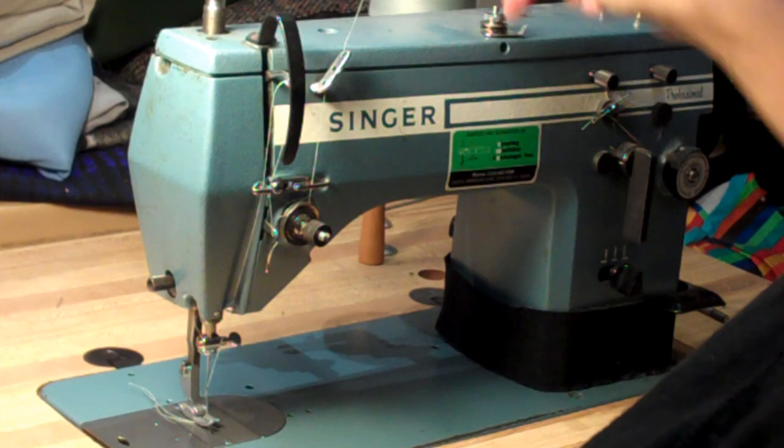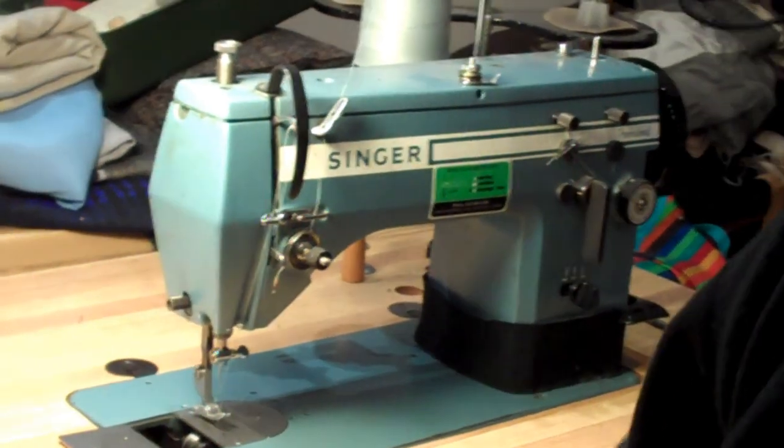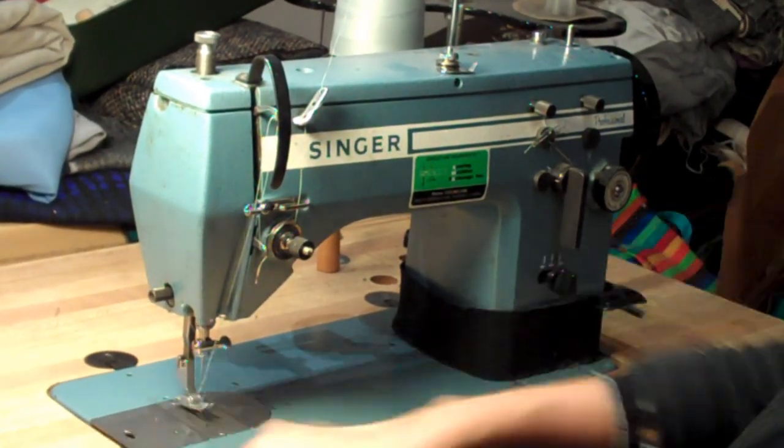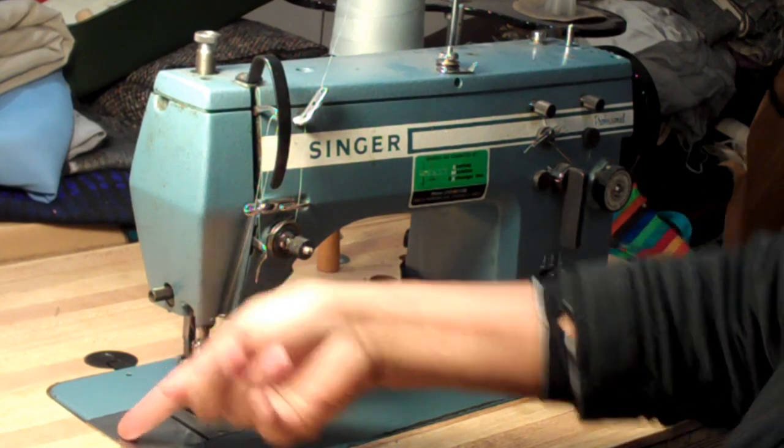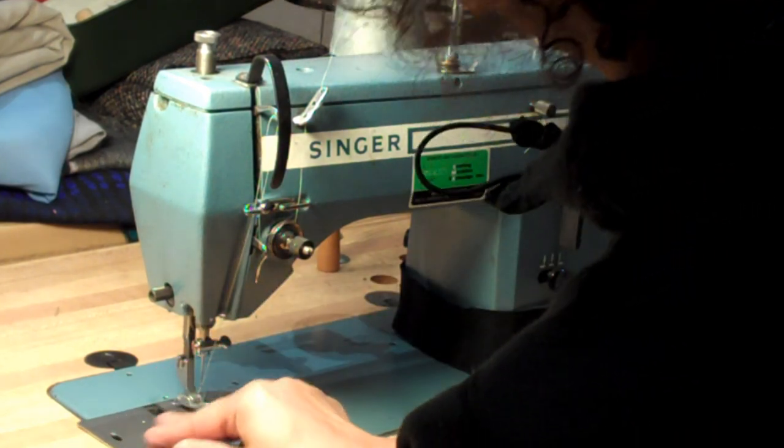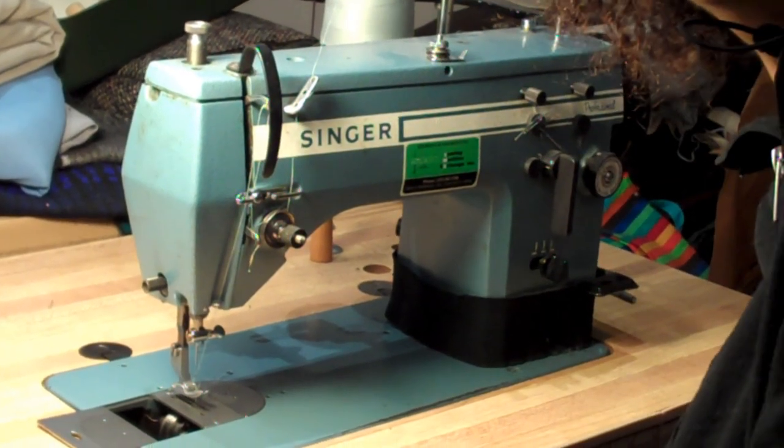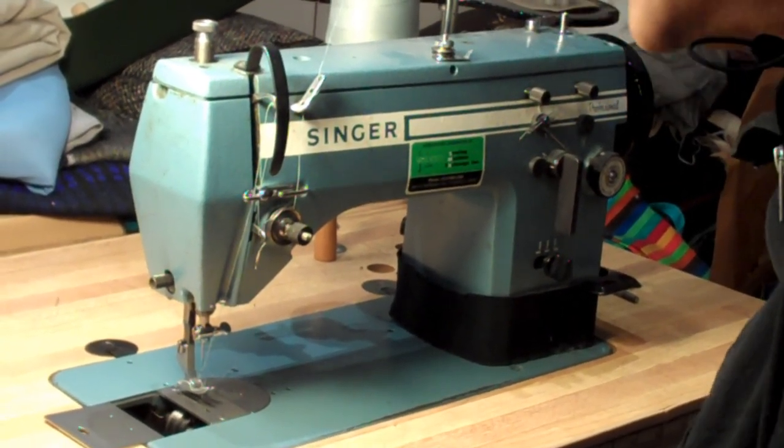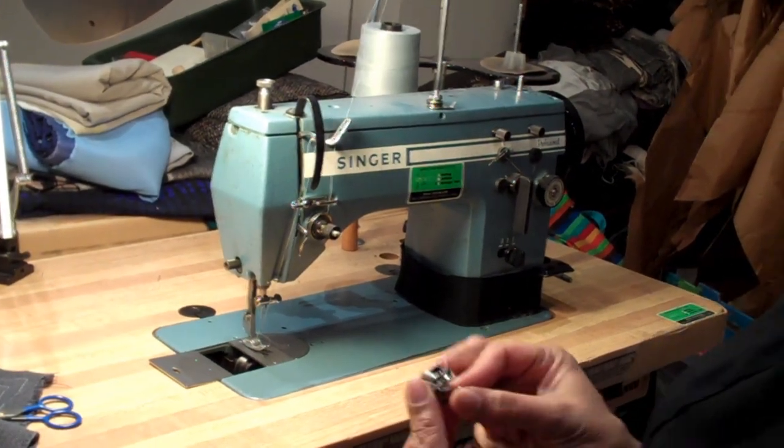The top thread is the needle thread. The bottom thread is the bobbin thread. This door opens up. There's a little hole there. You can use your finger, but you can also reach under, push it up. There's a flap on the side of the bobbin. You can pull it out.